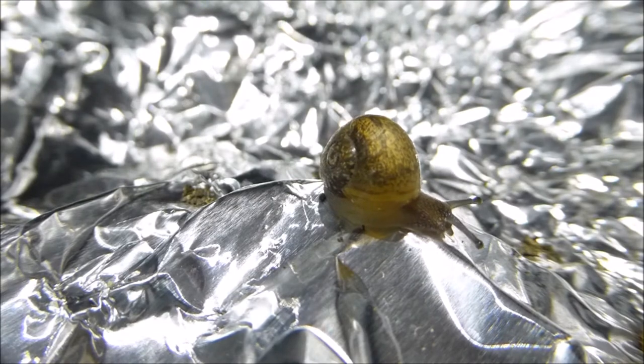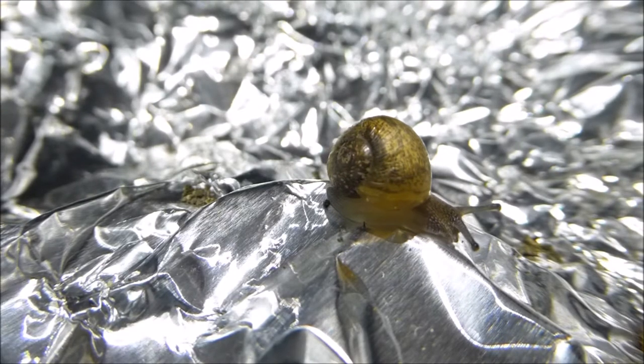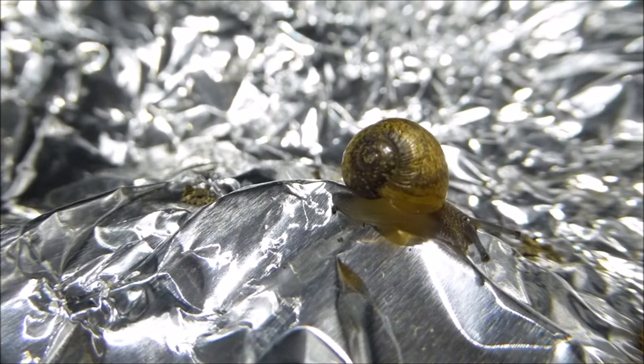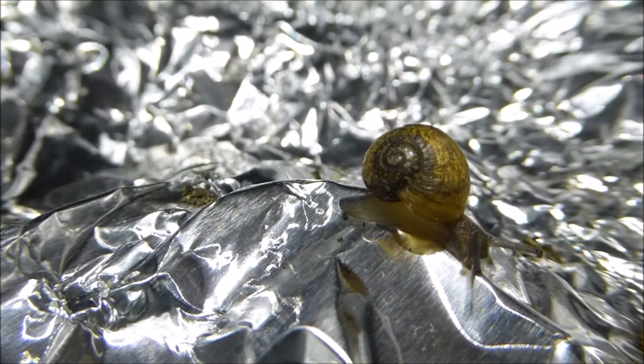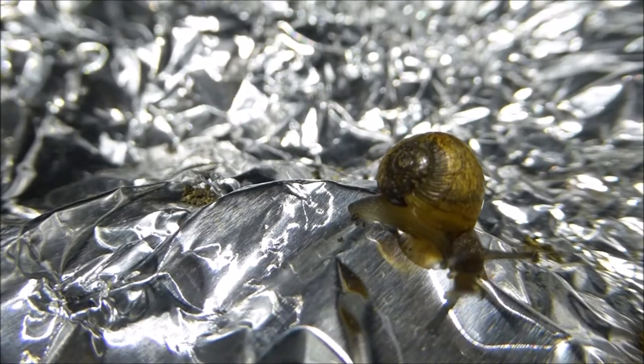The land snail breathes air, just like the peoples do, and it eats with its mouth hole. Its bottom pair of tentacles are for smelling, while its top pair are for crude seeing.